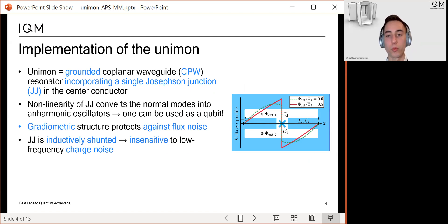Similarly to a lambda over 2 resonator, the Unimon circuit supports multiple normal modes. Since the Josephson junction is a non-linear circuit element, the normal modes that have some current running through the junction are converted into anharmonic oscillators. We use the anharmonic mode with the lowest frequency as the qubit.